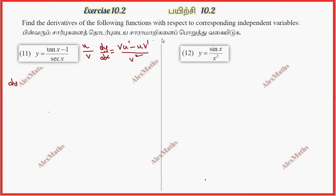Now dy by dx, we go to the derivative differentiation. First v is secant x. u dash, the derivative of tan x minus 1, is secant square x. The constant differentiates to zero. minus u.